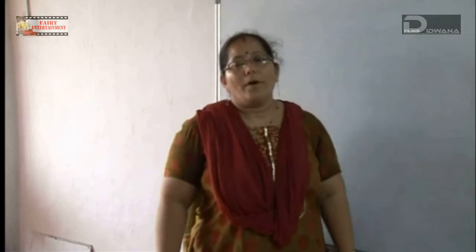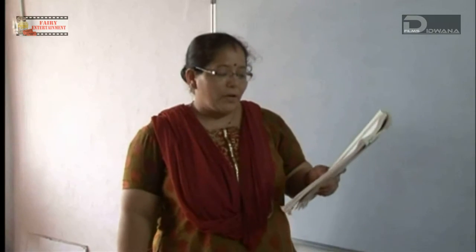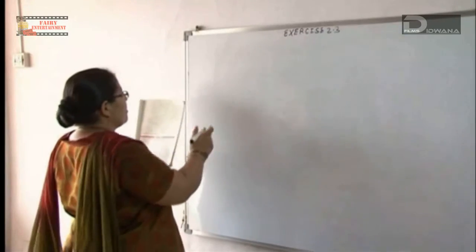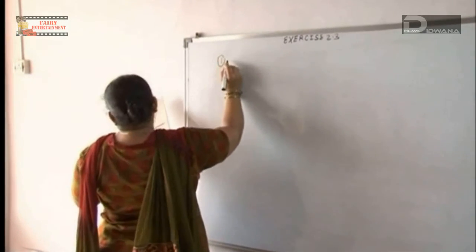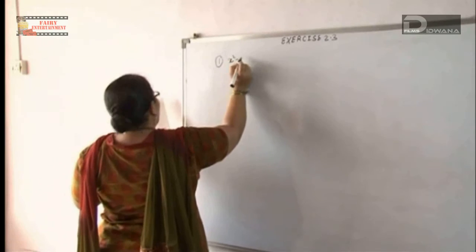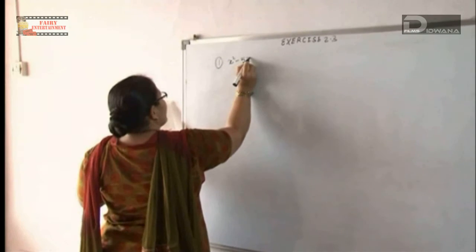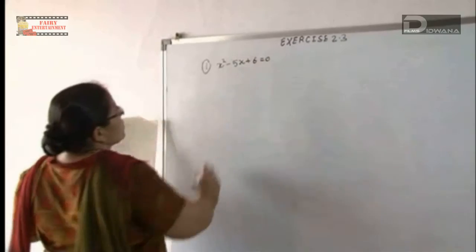We start with exercise 2.3, Quadratic Equation by Factorization Method. We start with equation number 1: x square minus 5x plus 6 equal to 0.